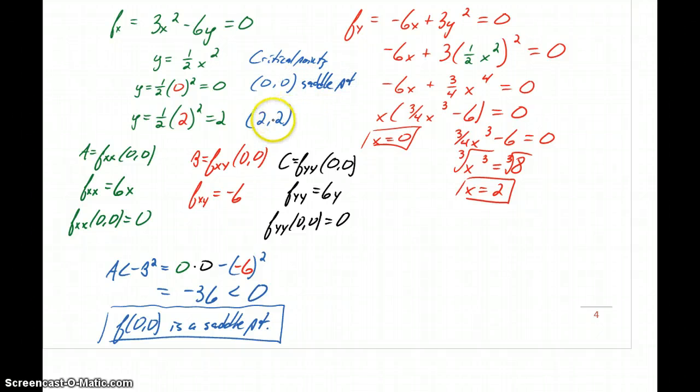And now we have to repeat that exact same process for 2, 2. So jumping through a few of the steps a little quickly here, again you'll want to make sure you can evaluate these on your own. But you should get a is equal to 12, b is equal to negative 6, and c is equal to 12. So using the same process here, except instead of evaluating each derivative at 0, 0, now we'll evaluate it at 2, 2.